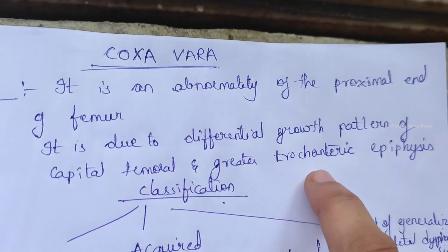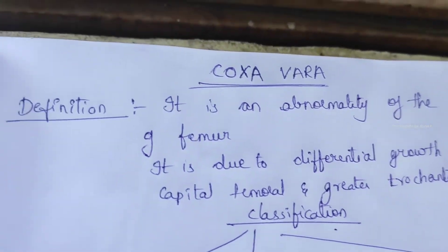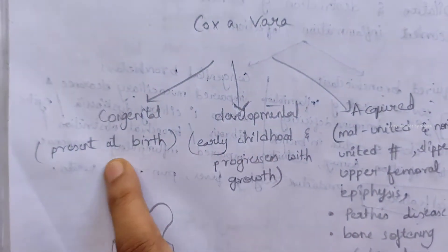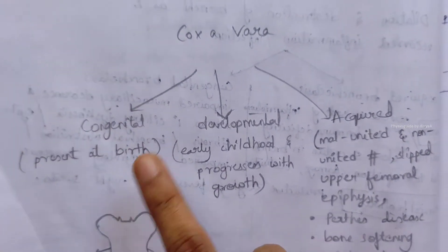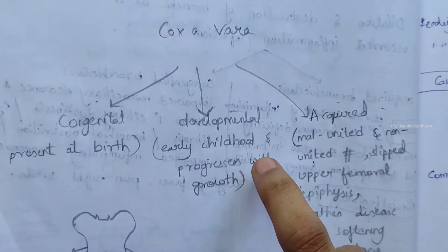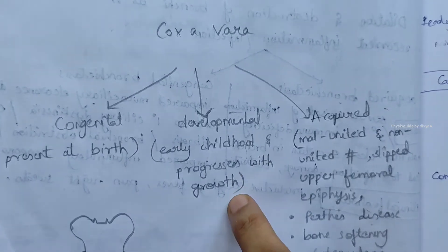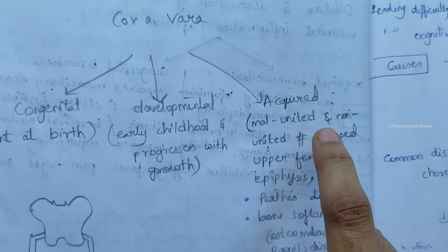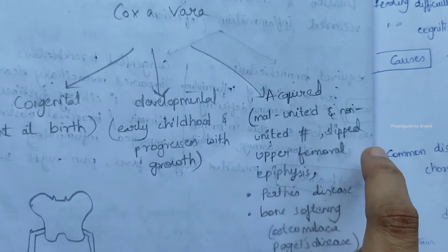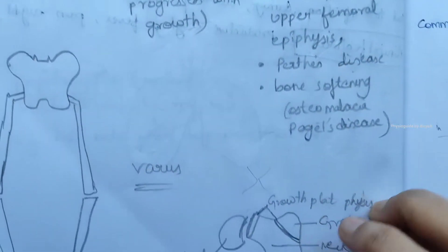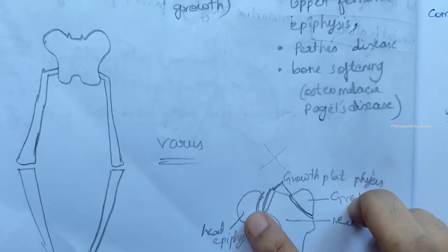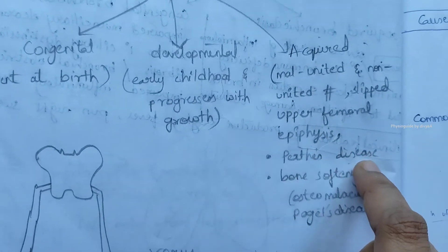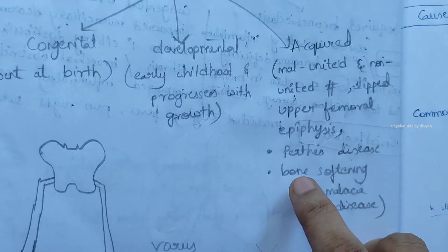Now we'll see the classification. Coxa vara can be congenital, meaning present at birth. Next is developmental, occurring in early childhood and progressing with growth. Next is acquired, which includes fracture types such as malunited or non-united fractures, and slipped upper femoral epiphysis.